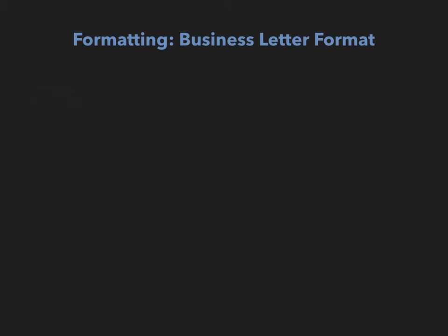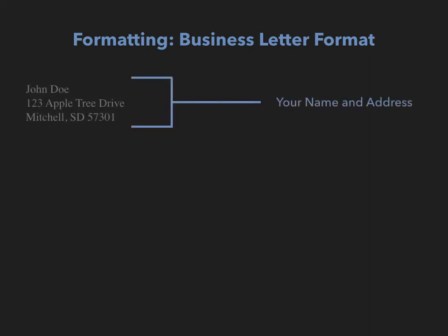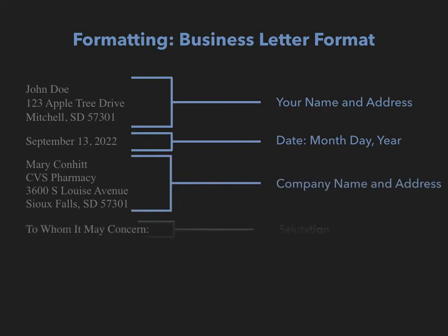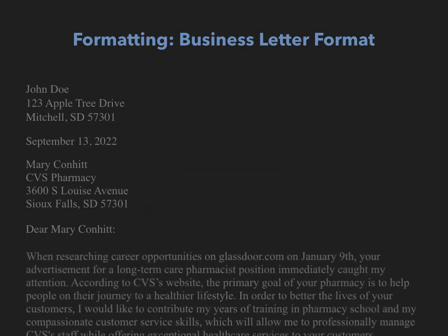Let's begin by considering business letter formatting. Within a business letter, we will begin by providing our name and address, followed by the date when we will send the letter. After the date, we will provide the company's name and address, which will be followed by a salutation. When writing the salutation, we should avoid addressing the letter to whom it may concern. As we are trying to create a customized cover letter, addressing it generically undercuts our goal. If you do not know who will be reviewing the letter, you can call the company and ask for the name of the individual who is conducting the search. If an individual receives two applications — one addressed generically and one personalized — the personalized application already possesses an advantage.